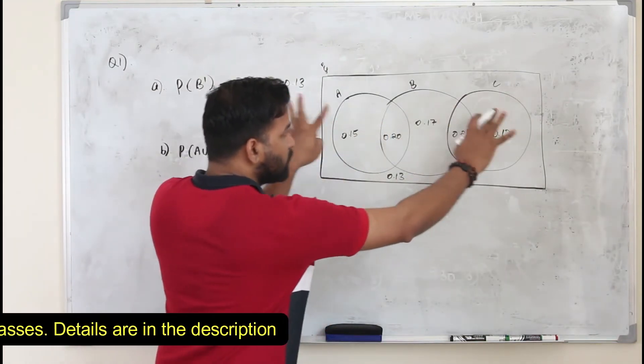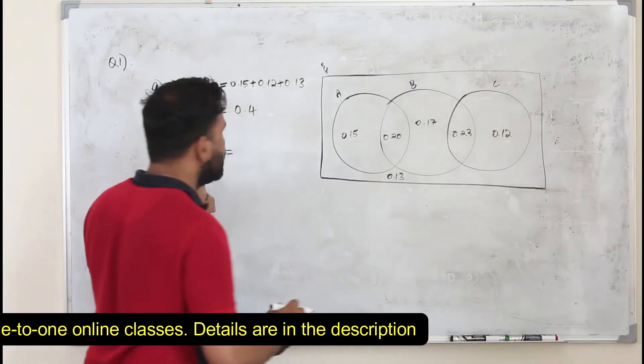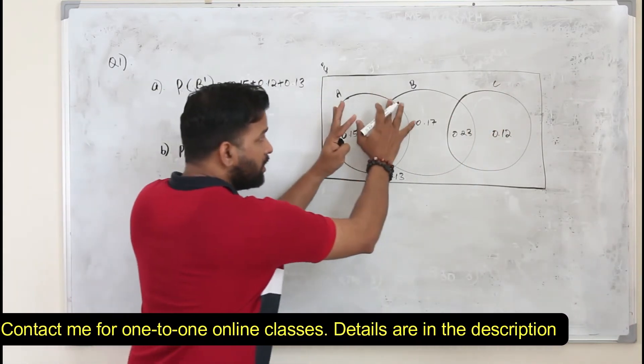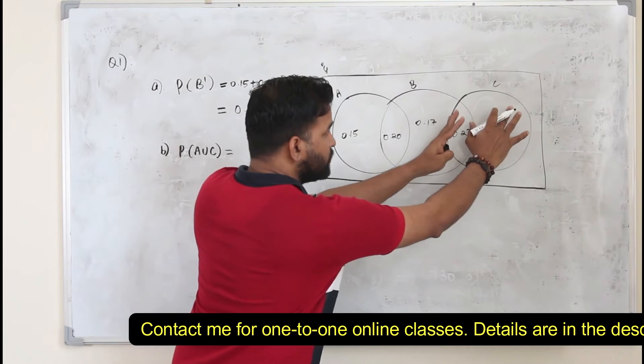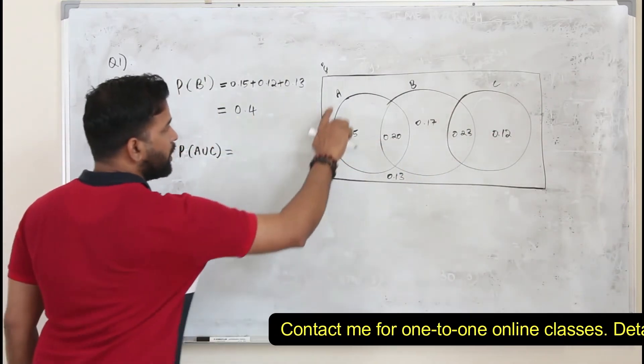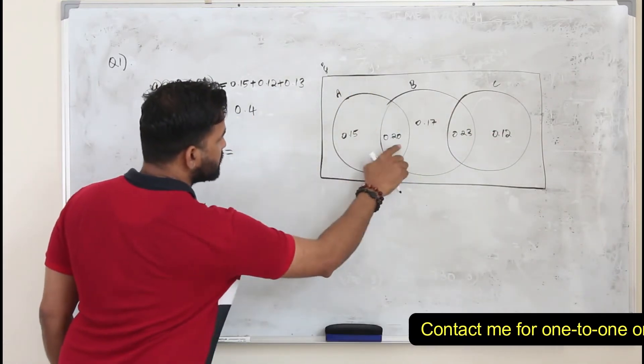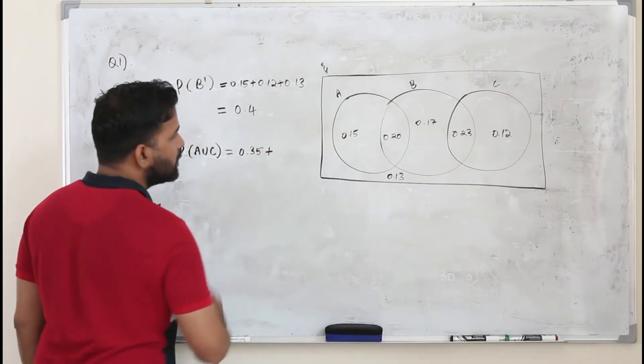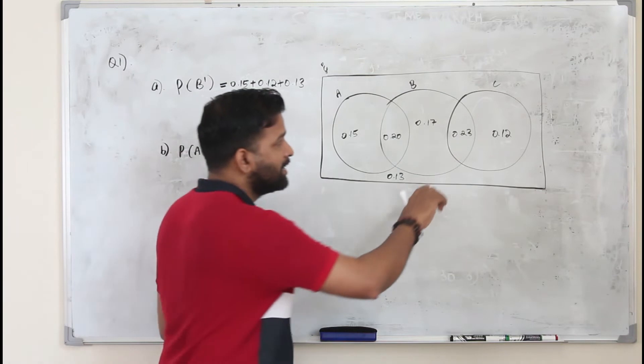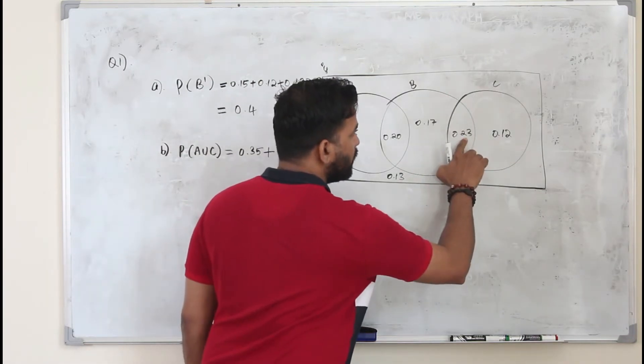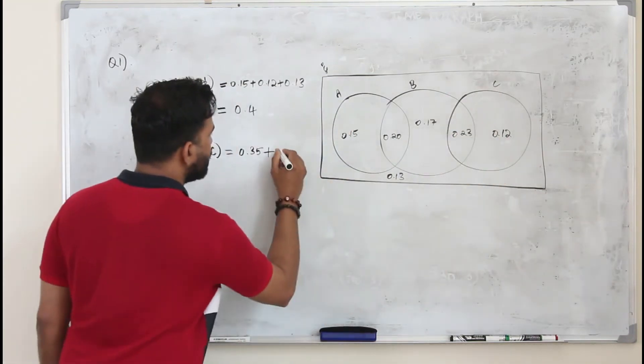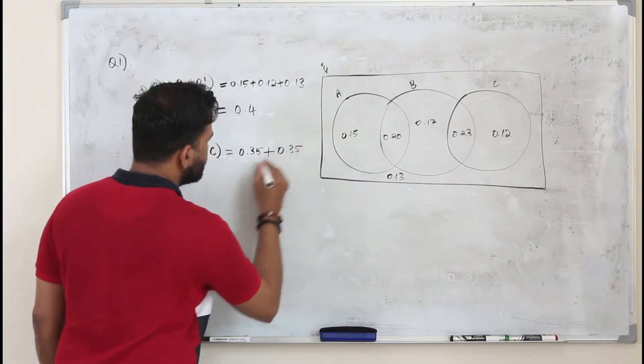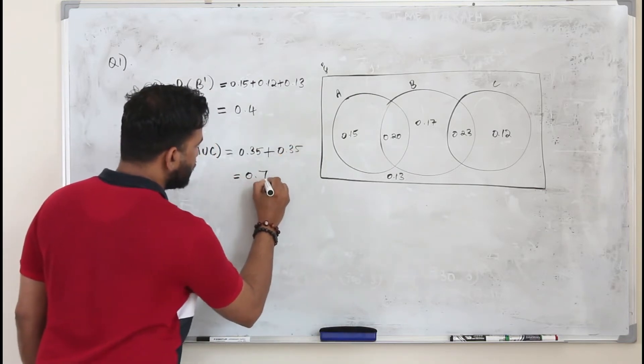So for mutually exclusive events, A union C is simple. Find A and find C, P of C, add them up together. So A is this whole thing, this plus this, 0.35 plus P of C. C is this, 0.23 plus 0.12 is 0.35. So the total is 0.7.